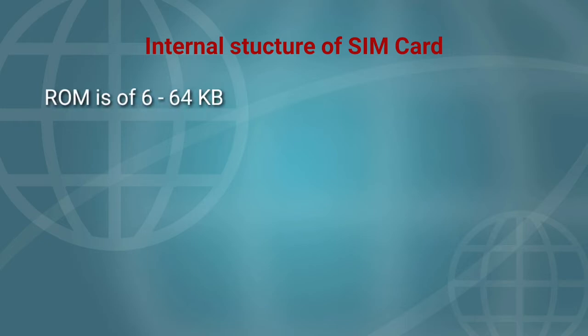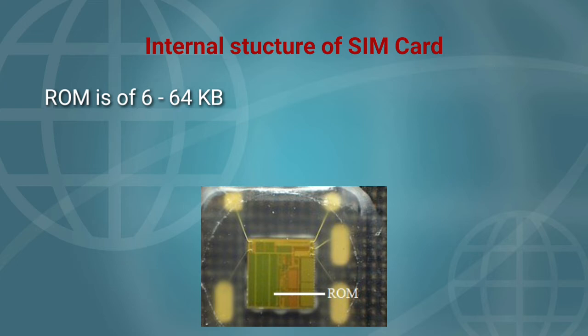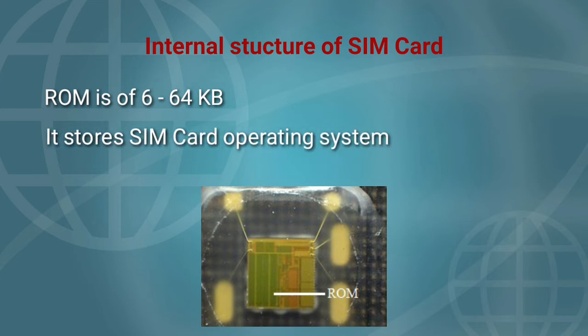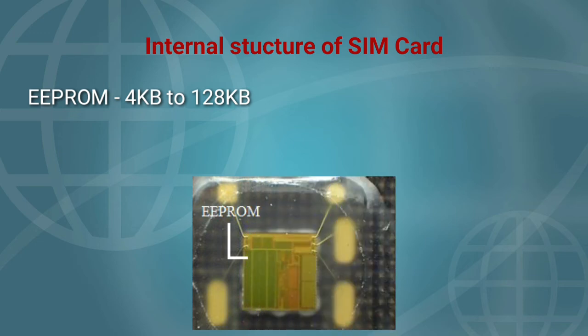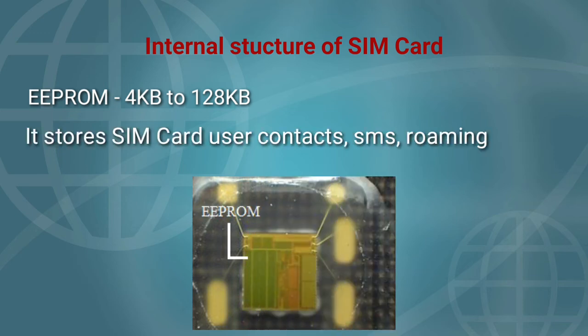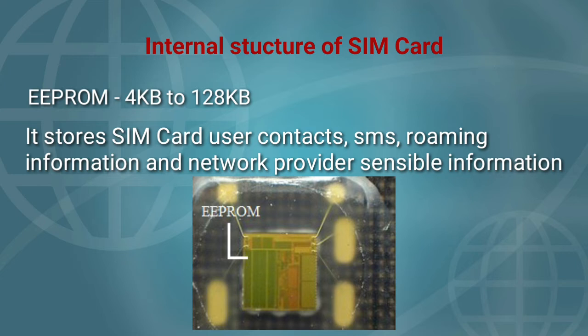ROM is 6 to 64 kilobytes and stores the SIM card operating system. EEPROM is 4 kilobytes to 128 kilobytes and stores SIM card user contacts, SMS, roaming information, and network provider-sensitive information.